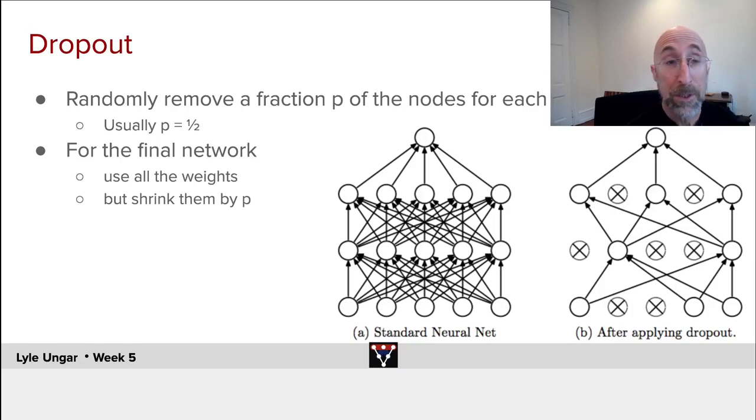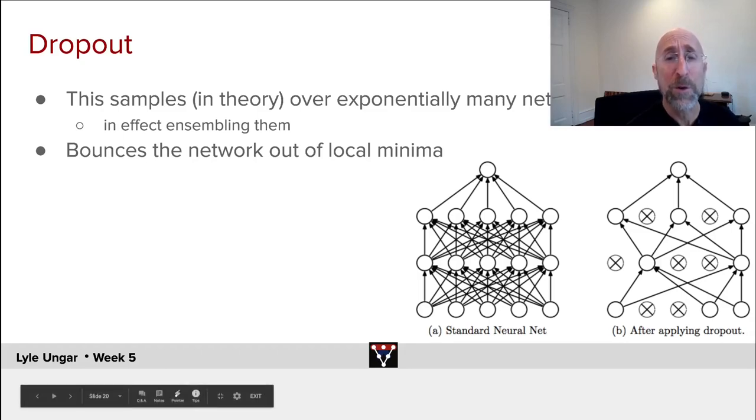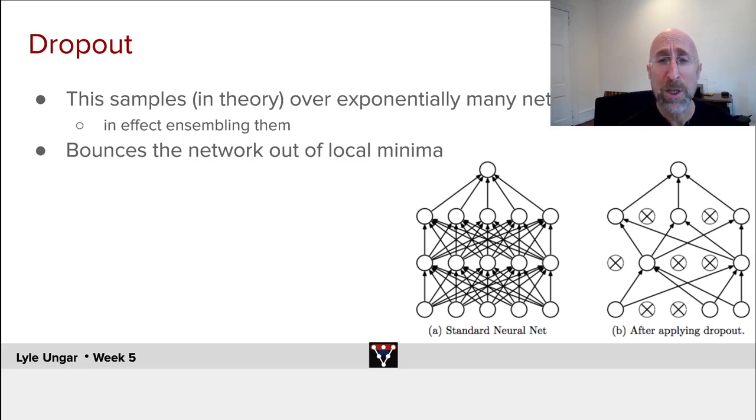That's it, that's dropout. Quite clever. Dropout in theory has an effect similar to sampling over exponentially many different networks. You're throwing in and out lots of different network structures, so you're sampling over all structures.